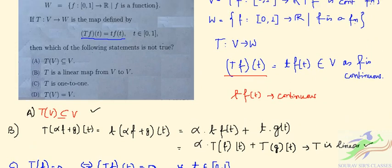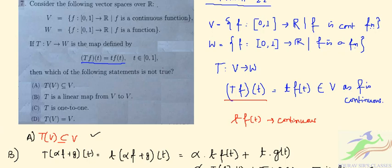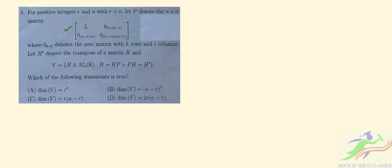So the incorrect option is D. Moving to question number 8: for positive integers r and n with r less than n, let P denote an n×n matrix, where 0_{k×l} is the zero matrix with k rows and l columns. H^T denotes the transpose of matrix H. We are given V as the set of n×n real matrices H such that H = HP + PH^T.